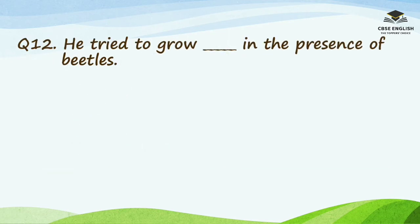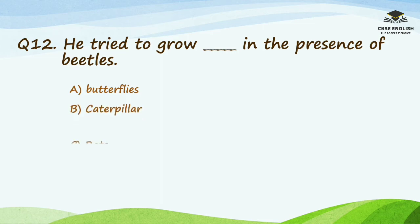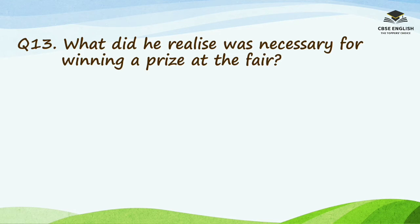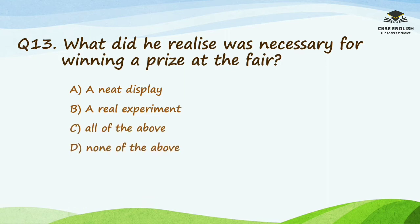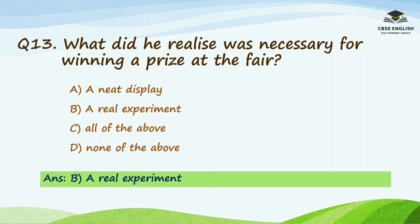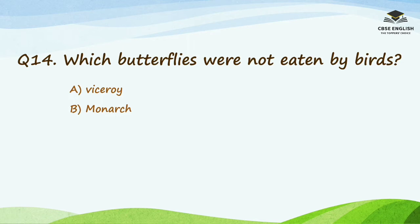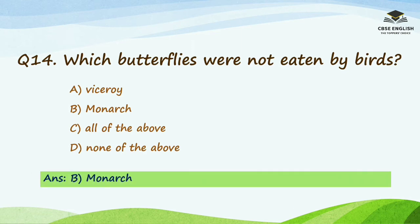Question number twelve: he tried to grow blank in the presence of beetles. Options are butterflies, caterpillar, rats, or snakes. The right answer is caterpillar. Question number thirteen: what did he realize was necessary for winning a prize at the fair? Options are a neat display, a real experiment, all of the above, or none of the above. The right answer is a real experiment. Question number fourteen: which butterflies were not eaten by birds? Options are viceroy, monarch, all of the above, or none of the above. The right answer is monarch.